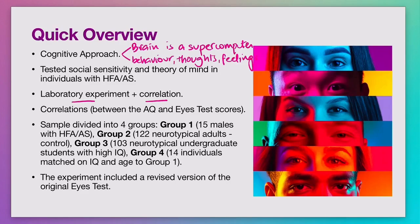The correlation part of this study was about the relationship between the Autism Quotient, or AQ, which is a specific assessment. It's called the Autism Quotient Test, and the point of this test is to measure the extent to which a particular person has traits that are associated with the condition of autism.